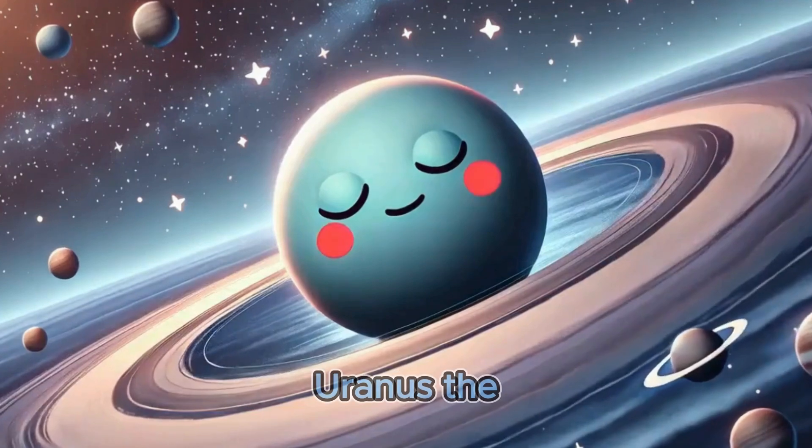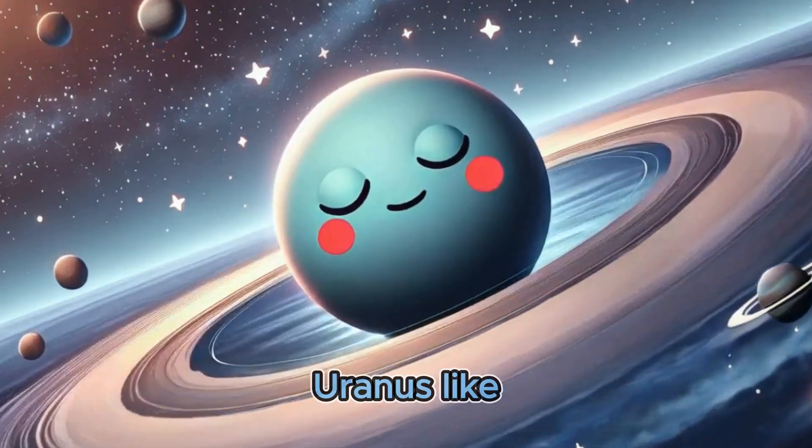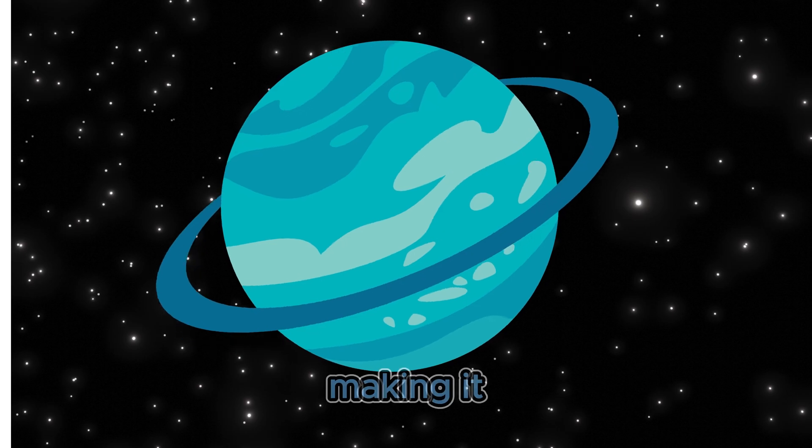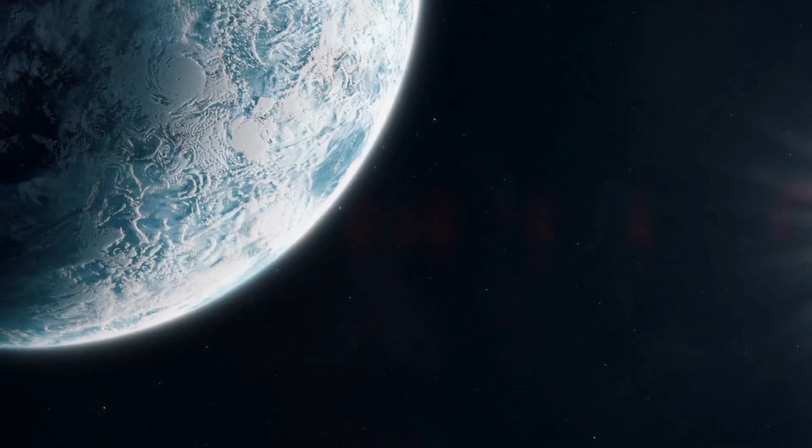Next was Uranus, the cold and quiet planet. Uranus liked to spin on its side, making it the silliest one in the family.